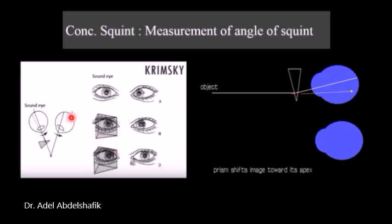In this diagram, this is the affected eye and this is the normal eye. So in this case we apply the prisms with the base pointed toward the affected eye and we increase the power till the corneal light reflex is central.